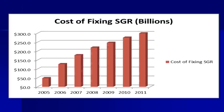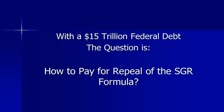The cost of permanently fixing the SGR has increased each time they've done one of these temporary doc fixes, to the point that it's now estimated a permanent fix would cost somewhere in the neighborhood of about $300 billion. With a $15 trillion deficit, the question is how do you pay for repeal of the SGR formula?